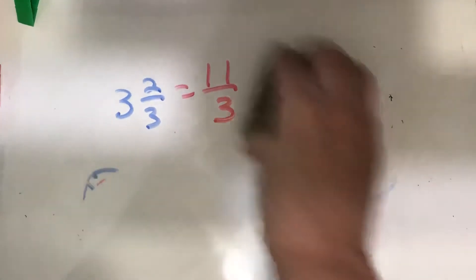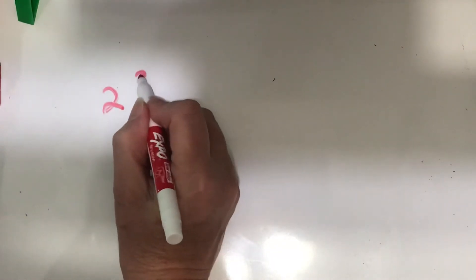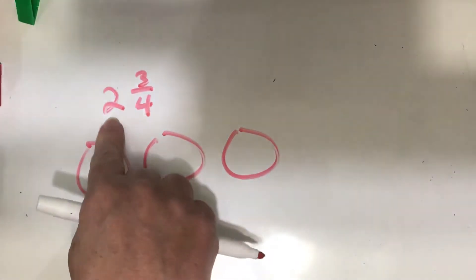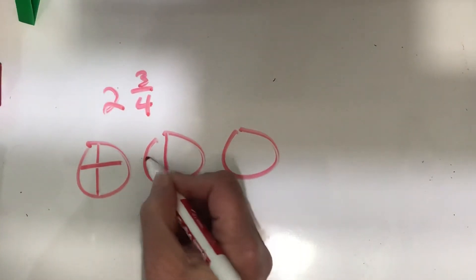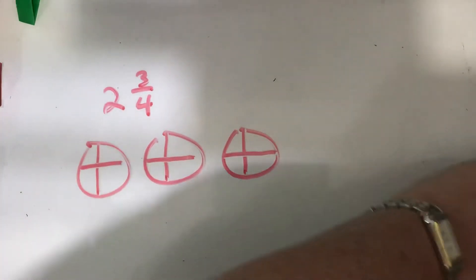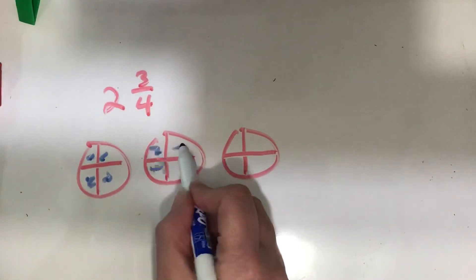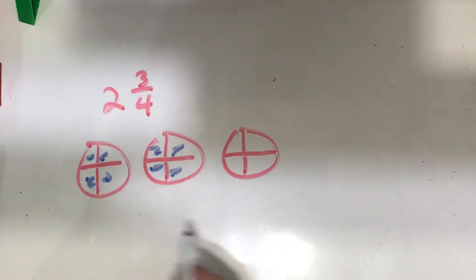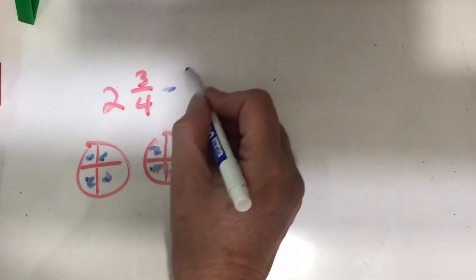We know that we have two and three-fourths. I have to draw three figures, because two and three-fourths is more than two. So I know that each of my wholes is going to have four-fourths. And I have two wholes, so that would be eight-fourths with my wholes. So that's four, and that's eight-fourths, plus three more fourths here would make eleven-fourths.